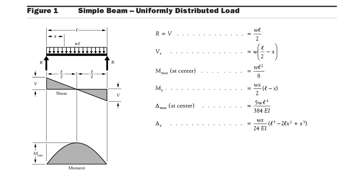Now we will see the first condition: a simply supported beam carries a UDL. What is the maximum bending moment? The maximum bending moment is wl²/8, and it occurs at the center. So for a simply supported beam carrying a UDL, the maximum bending moment occurs at the center and its value is wl²/8.